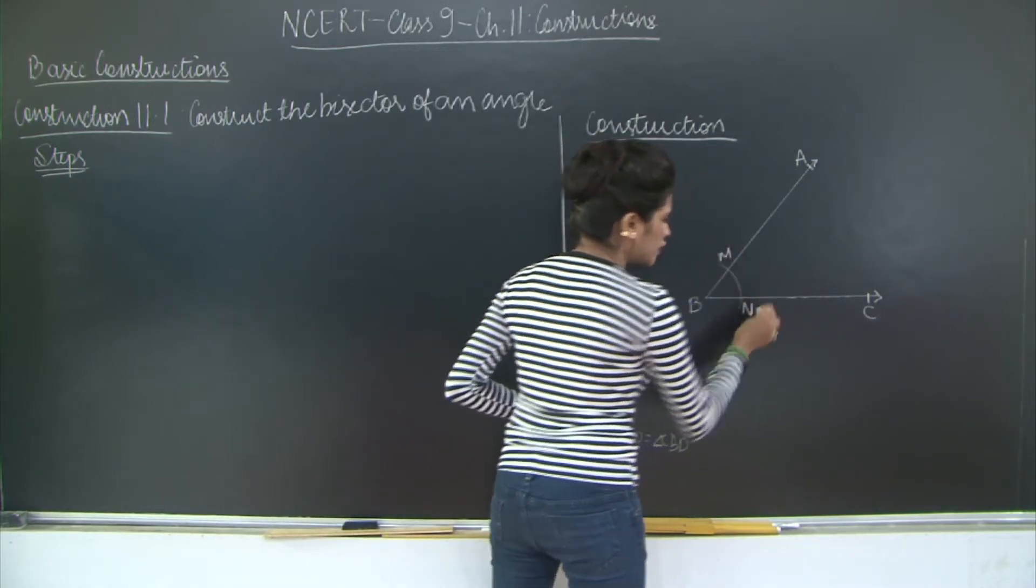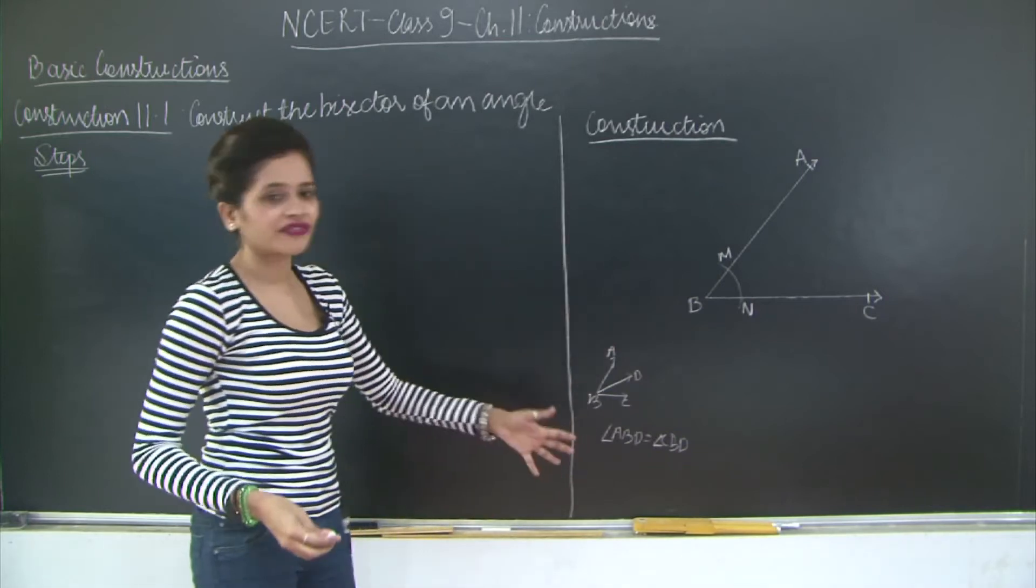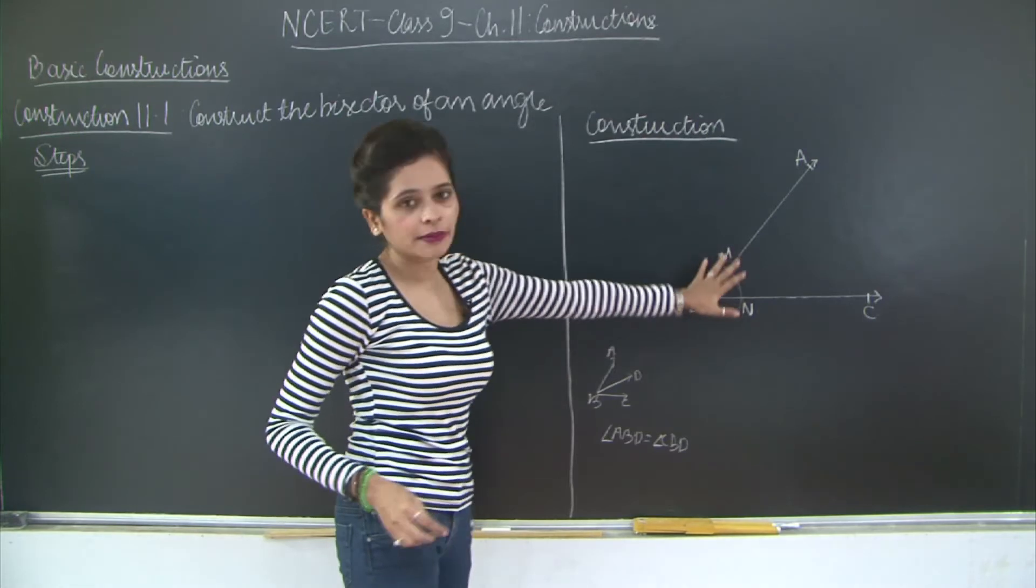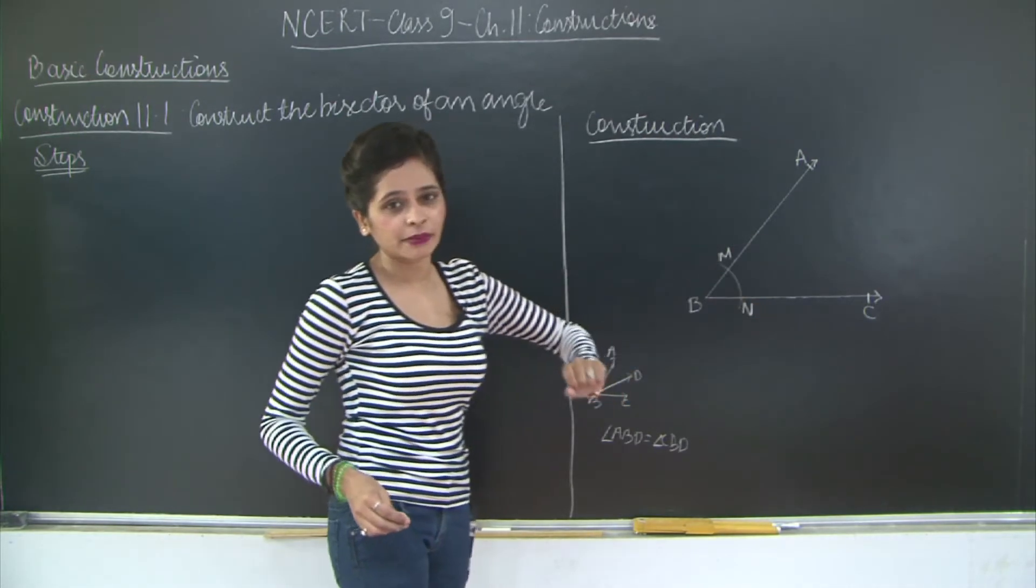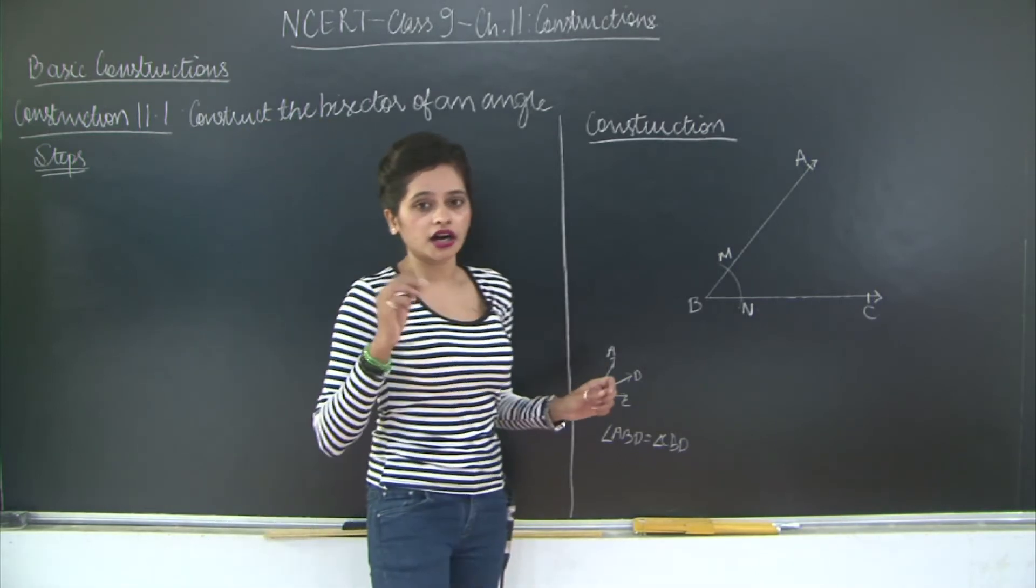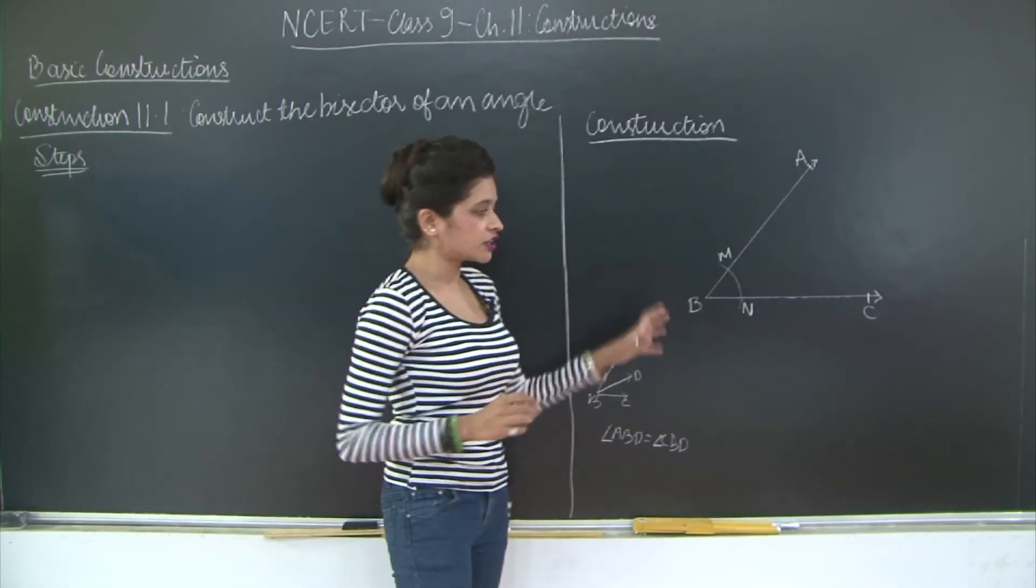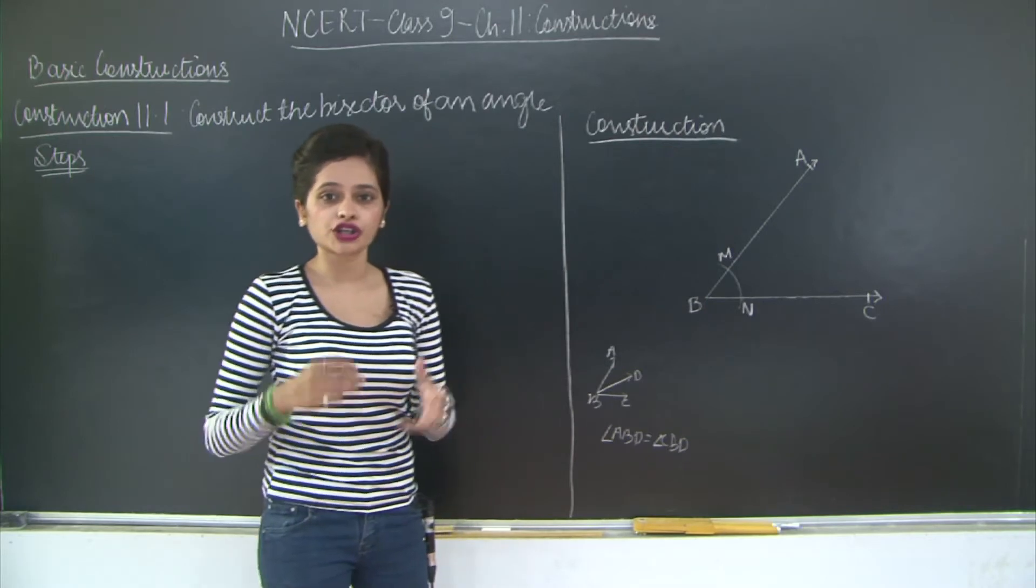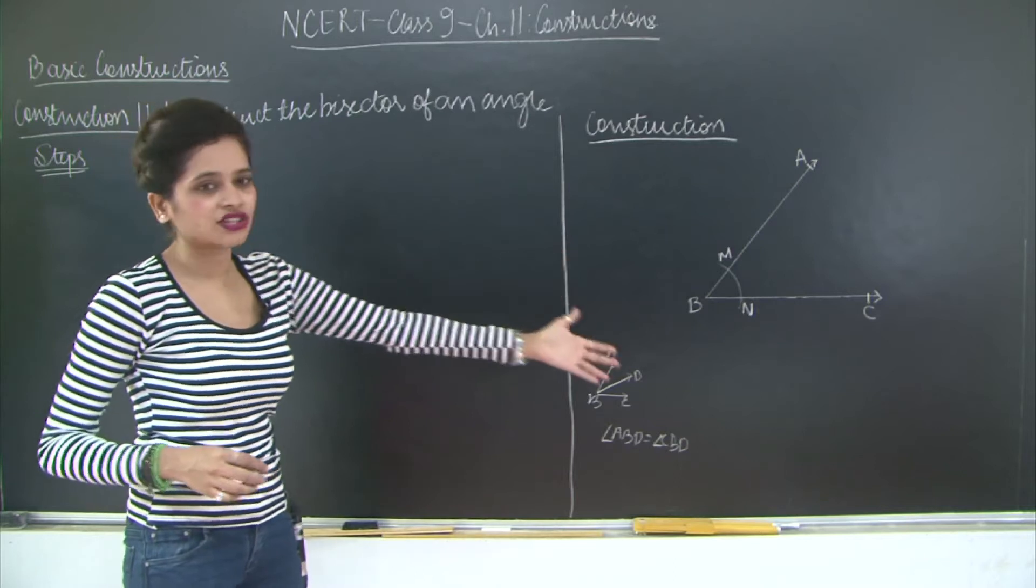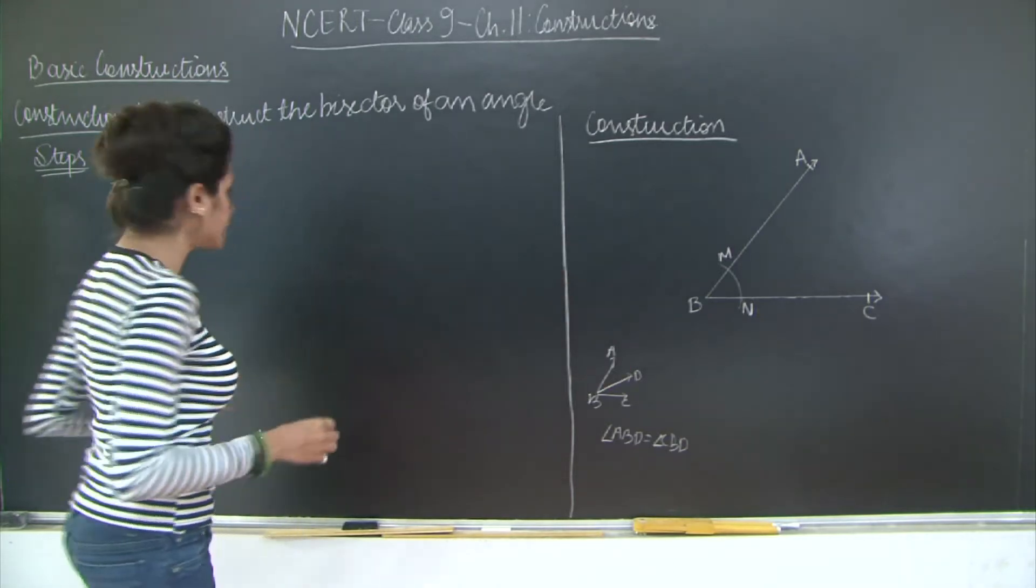You can mark any other points. The choice of alphabets is completely your choice. It is not necessary that if I have taken MN and ABC you have to take MN and ABC. But just in case you are asked to draw a construction with particular naming conventions in your exams or in your test then please follow those.